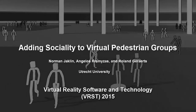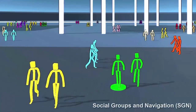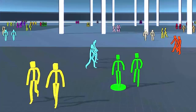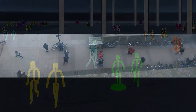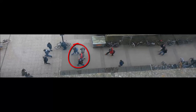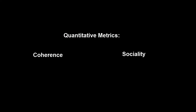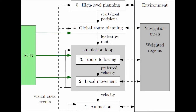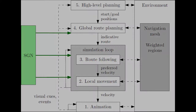We present a new method named Social Groups and Navigation (SGN) to simulate the walking behavior of small pedestrian groups in virtual environments. Our method aims at capturing the walking behavior of small social groups as observed in real life. We define quantitative metrics to measure a group's coherence and sociality based on existing empirical data. Our SGN method can be used in any crowd simulation framework that handles global path planning and local avoidance as separate steps, and it induces social group behavior on both global and local levels of such a framework.